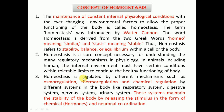Homeostasis is regulated by different mechanisms such as osmoregulation, thermoregulation, and chemical regulation, carried out by different systems of the body like the respiratory system, digestive system, nervous system, urinary system, and so on. These systems maintain the stability of the body by releasing stimuli in the form of chemical messages, hormones, or neural coordination.